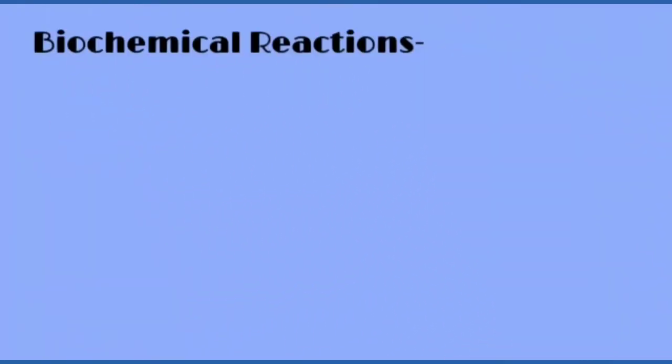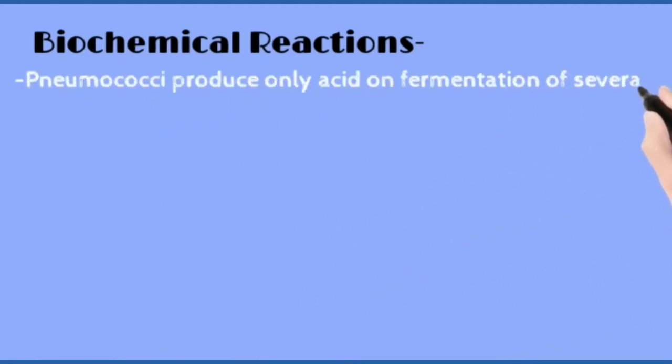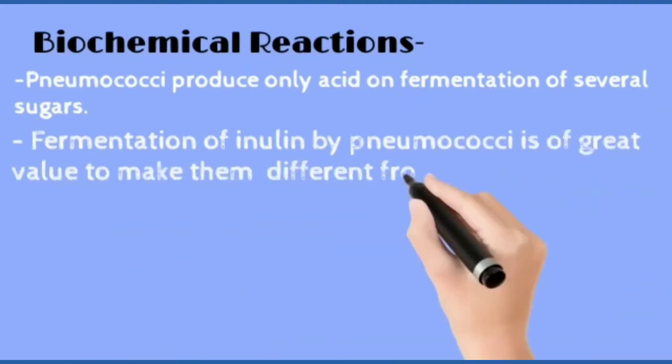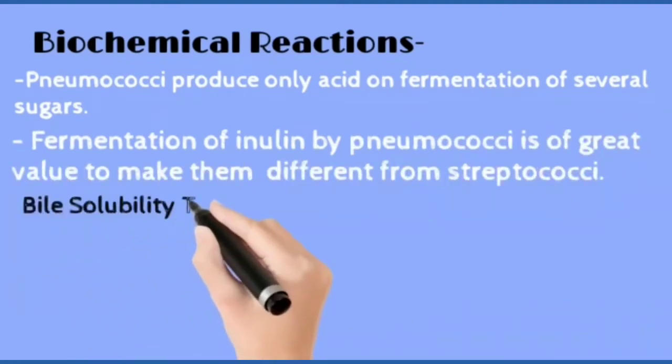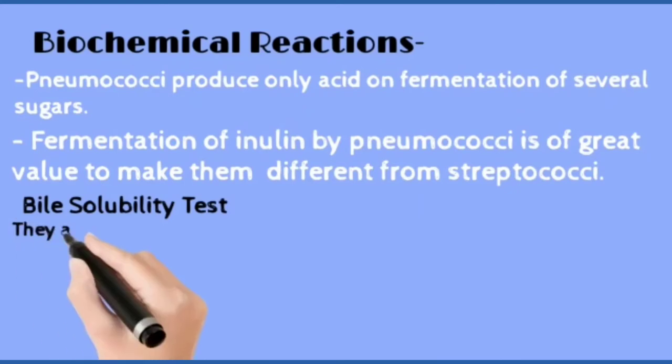Now some biochemical reactions. Pneumococci produce only acid on fermentation of several sugars. Fermentation of inulin by pneumococci is of great value to make them different from streptococci.